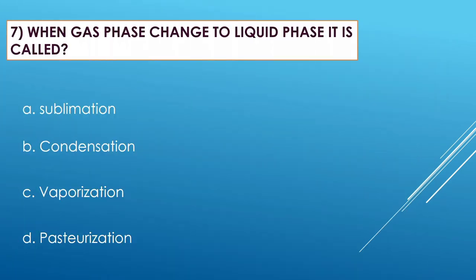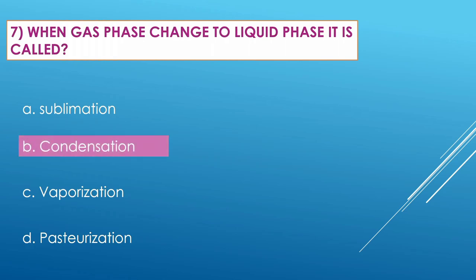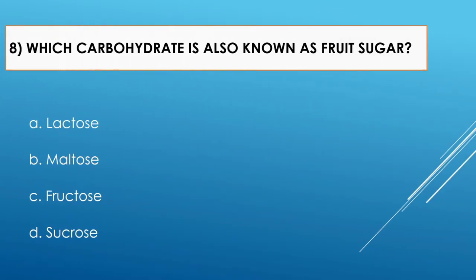Question number seven: When gas phase changes to liquid phase, it is called — Option A: sublimation. Option B: condensation. Option C: vaporization. Option D: pasteurization. The correct option is condensation.